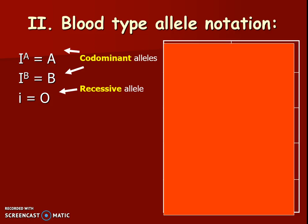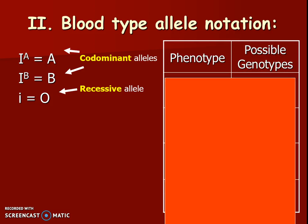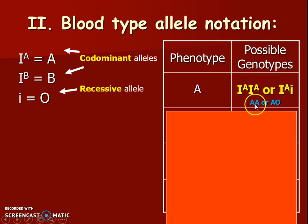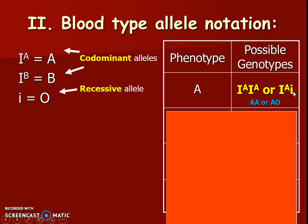In our chart, the left column shows the phenotype and the right shows the genotypes that produce it. For blood type A, the genotypes are I-raised-A / I-raised-A (homozygous, like big A big A) or I-raised-A / little i. That second one is like having A and O, but since O is recessive, it still looks like blood type A — there's just a hidden O.